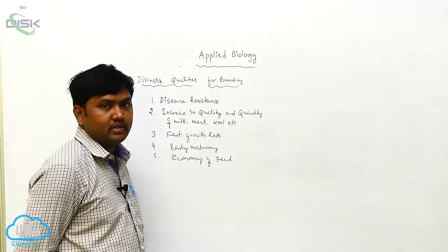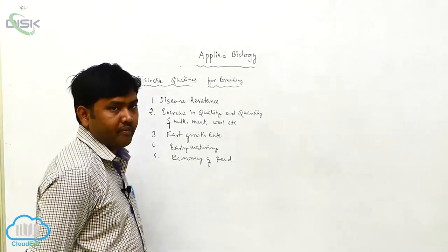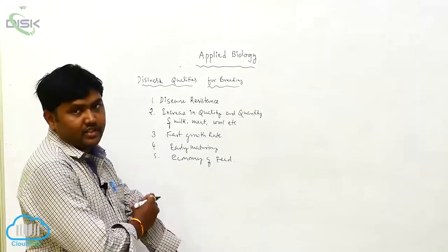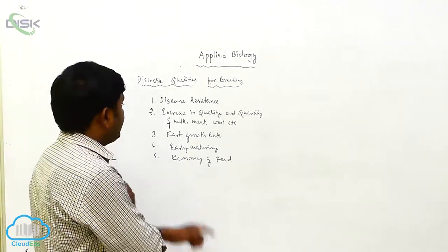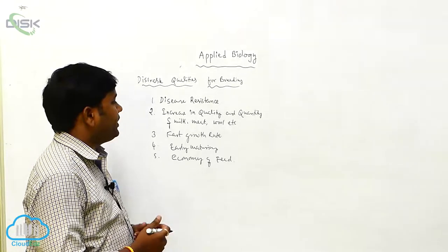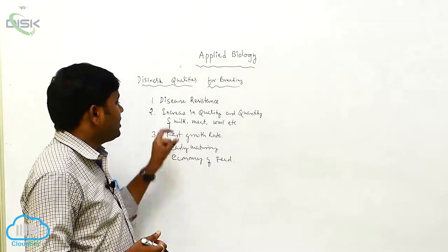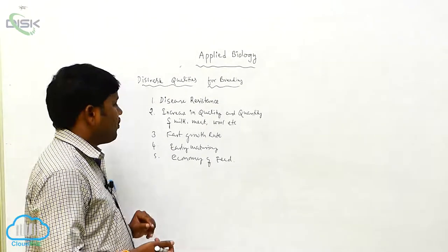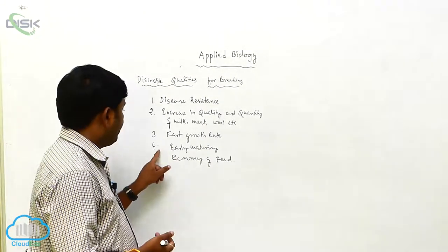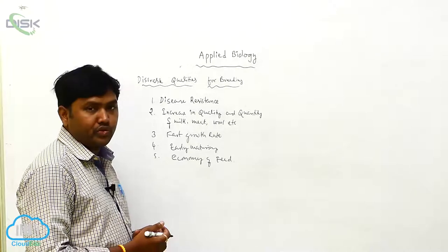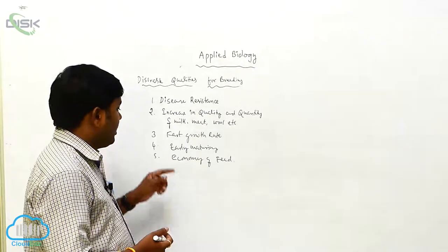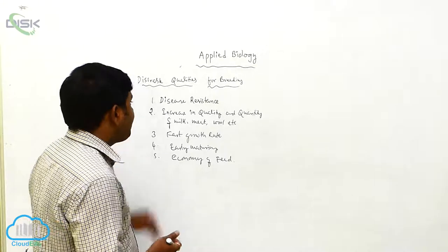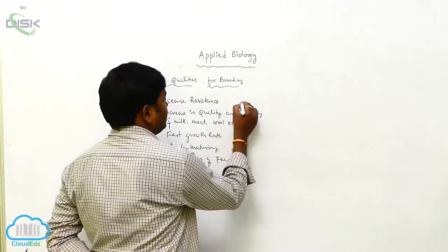The desirable qualities for breeding are: first, disease resistance capacity; second, increase in quality and quantity of milk, meat, wool, etc.; third, fast growth rate; fourth, early maturity or early maturing; and fifth, economy of feed.